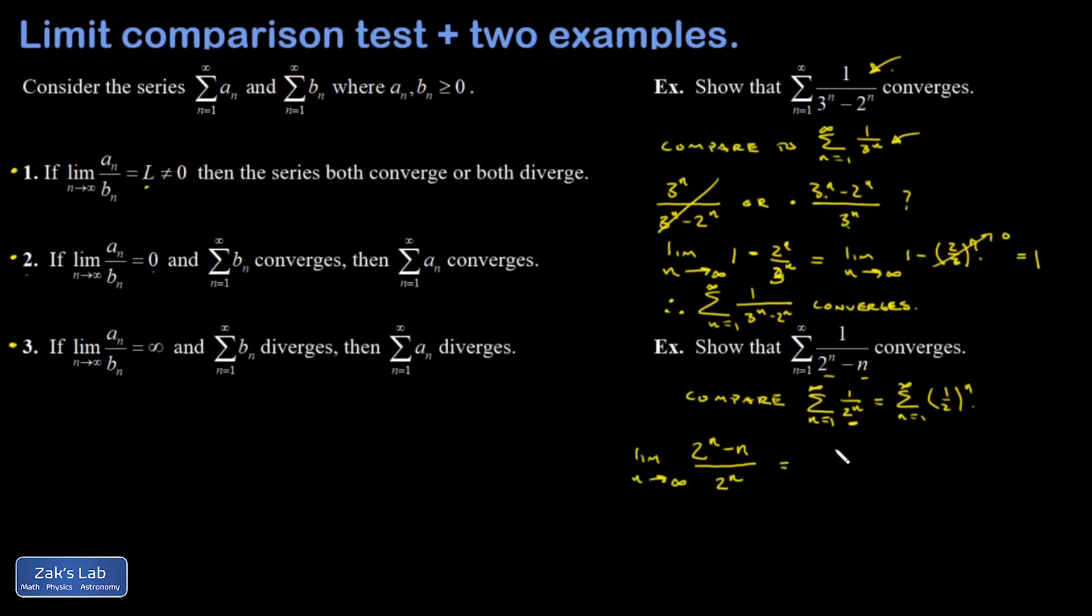All right. So I have the ratio of the terms in the two series. I'm taking the large N limit of it. So I'm going to divide each term in the numerator by two to the N. And the one isn't so bad to deal with. But then I have to investigate the limit of N over two to the N. And that is an indeterminate form.